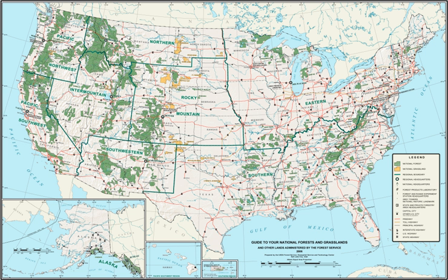All but three national grasslands are on or at the edge of the Great Plains. Those three are in southeastern Idaho, northeastern California, and central Oregon.